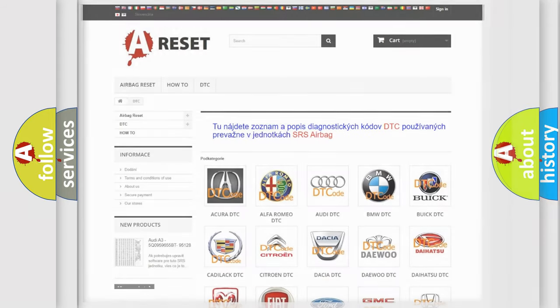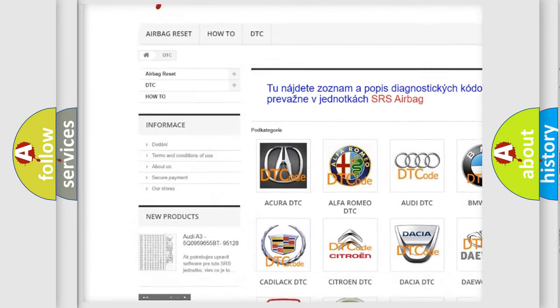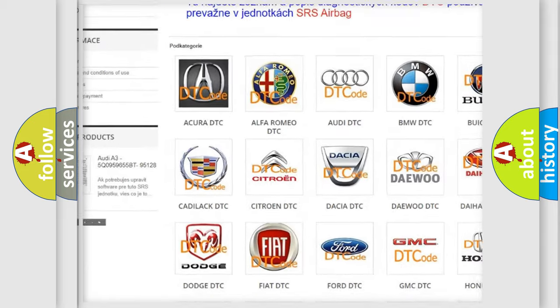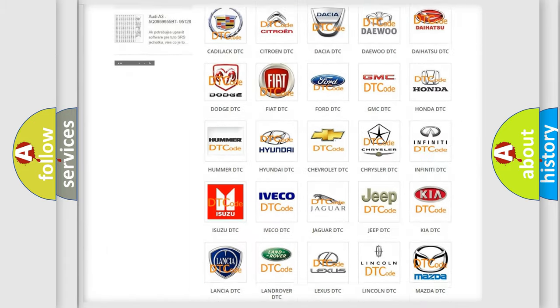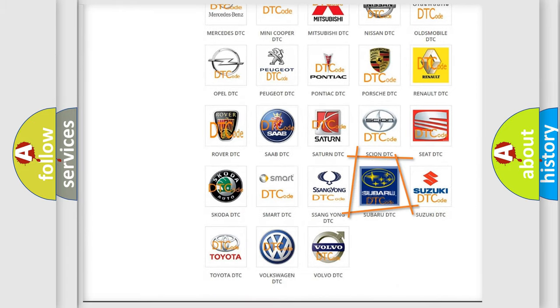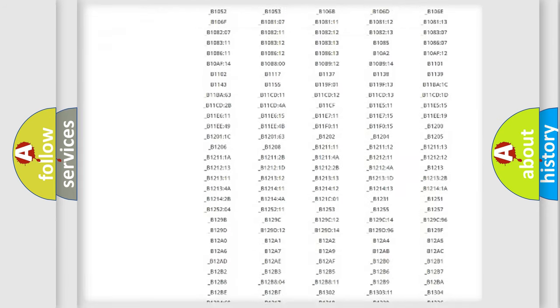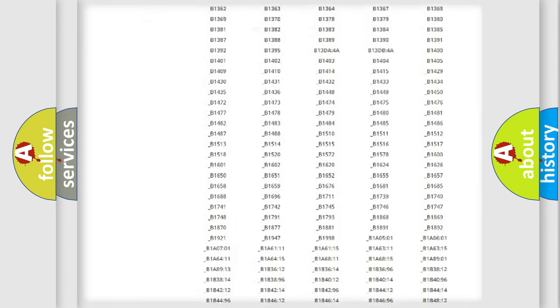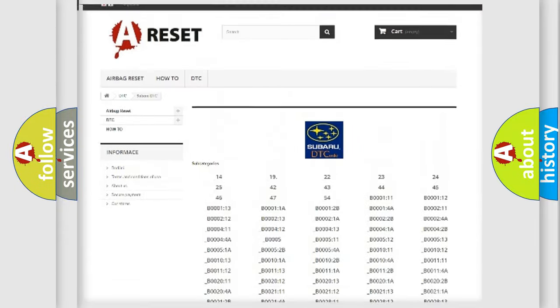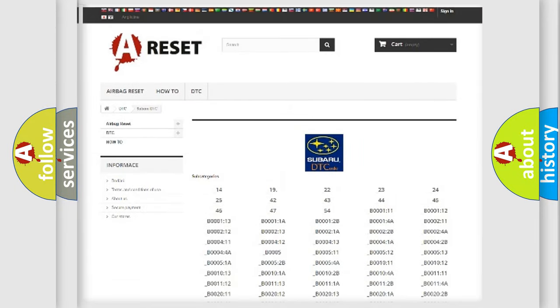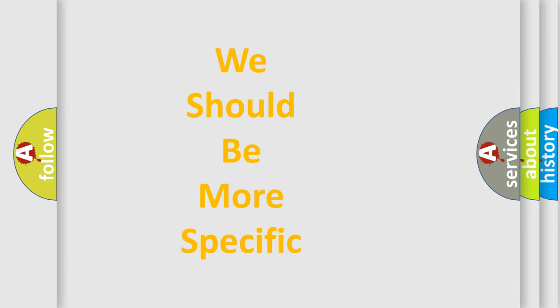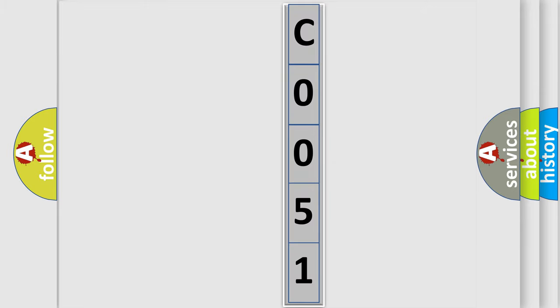Our website airbagreset.sk produces useful videos for you. You do not have to go through the OBD2 protocol anymore to know how to troubleshoot any car breakdown. You will find all the diagnostic codes that can be diagnosed in Subaru vehicles, and also many other useful things. The following demonstration will help you look into the world of software for car control units.